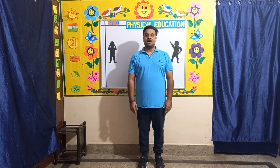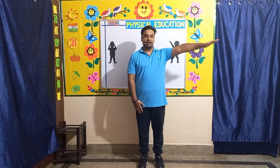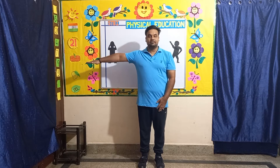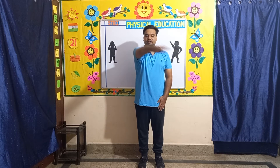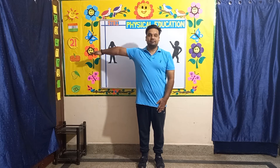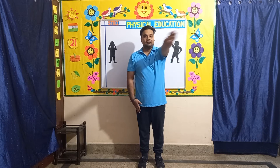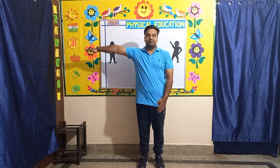Exercise number one: left and right arm swing. In this exercise, children, we will bring a hand out to the left and then to the right. Let's start: one, two, three, four, five, six, seven.